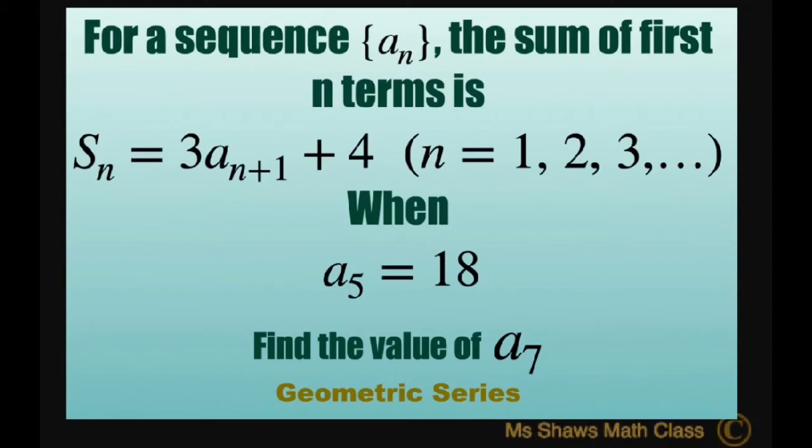For natural numbers 1, 2, 3, and so forth. When the 5th term is 18, we want to find the value of the 7th term.